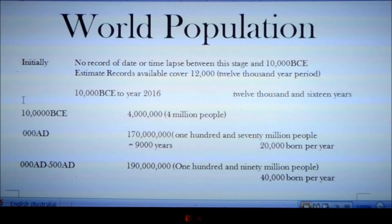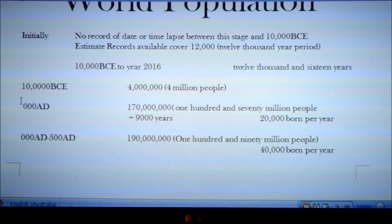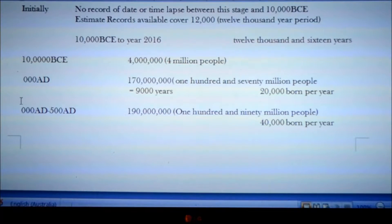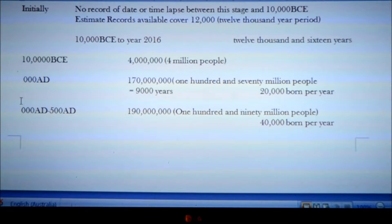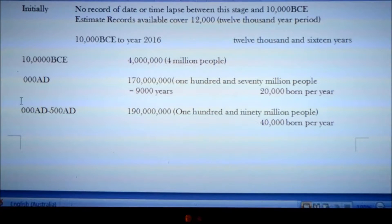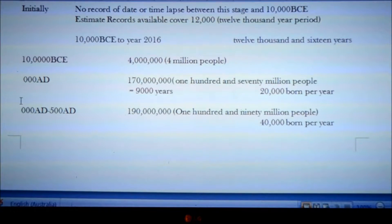In the year 10,000 BCE, it was approximated there were 4 million people on the planet. In the year 0 AD, they say we had 170,000,000 people. Dividing that by the 9,000 years, that means on average 20,000 people were being born each year.